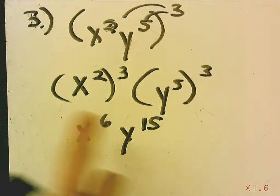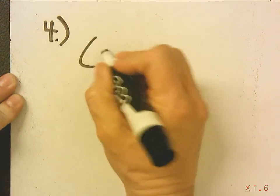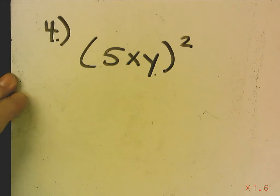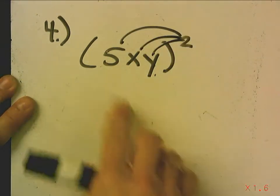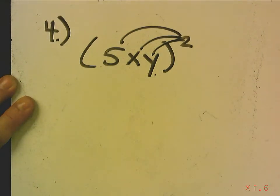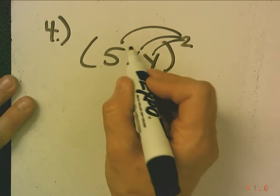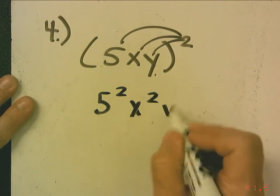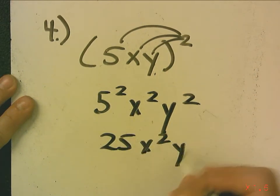Normally we would just do this in one step — I just wanted to show you the work. Number 4: 5xy squared. This is the power of a product. You have to remember to raise each factor to the second power. Many people forget to raise the number to the power because they don't see an exponent there. But this becomes 5 squared, x squared, y squared, which is 25x squared y squared.